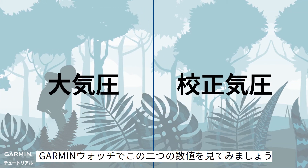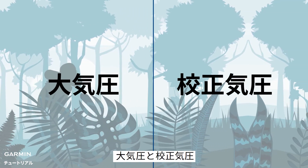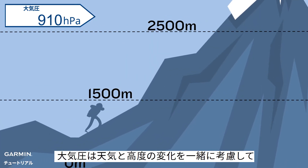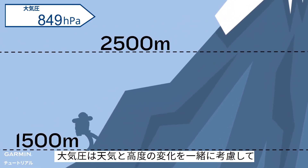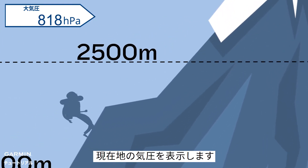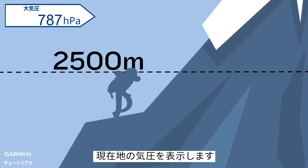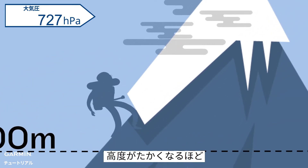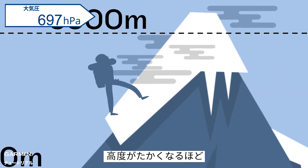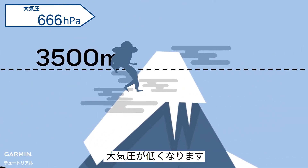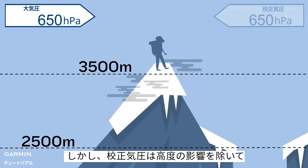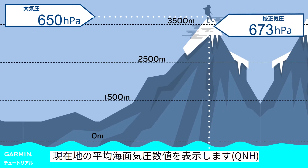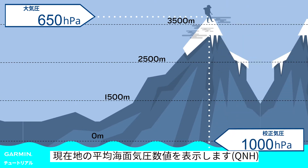After understanding these two concepts, let's go back to the two values on the Garmin watch: the ambient pressure and the barometric pressure. The ambient pressure considers both weather and elevation factors — it shows the pressure of your current location. Therefore, the higher the elevation is, the lower the ambient pressure will be.